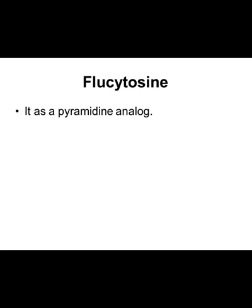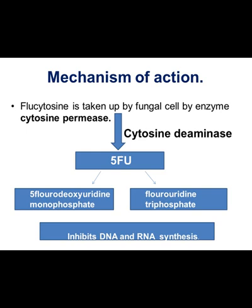The second drug is flucytosine, a pyrimidine analogue. It is taken up by the fungal cell by the enzyme cytosine permease. Intracellularly, it is converted into 5-fluorouracil by the enzyme cytosine deaminase. This 5-fluorouracil is then converted into two products — 5-fluorodeoxyuridine monophosphate and fluoridine triphosphate — which in turn lead to inhibition of DNA and RNA synthesis.